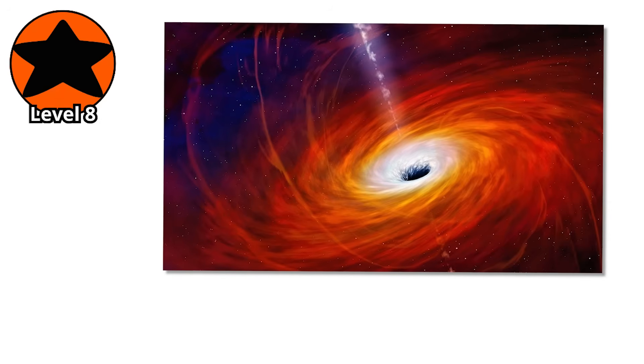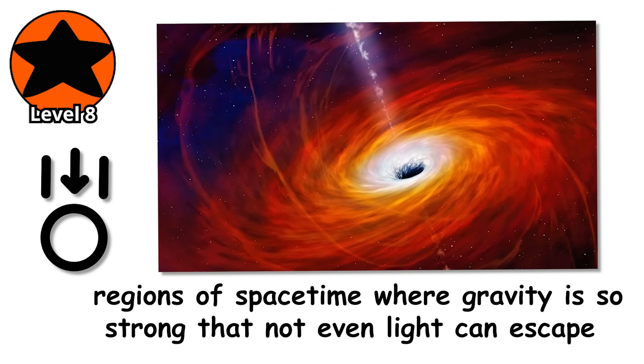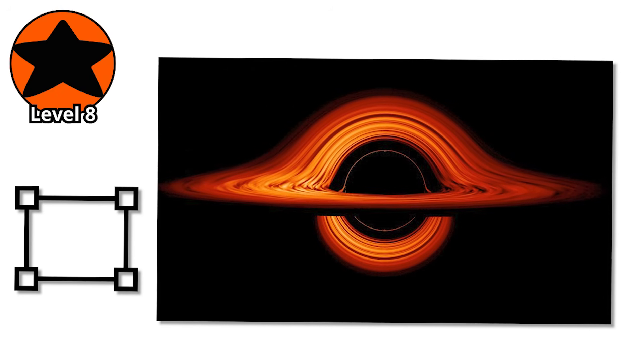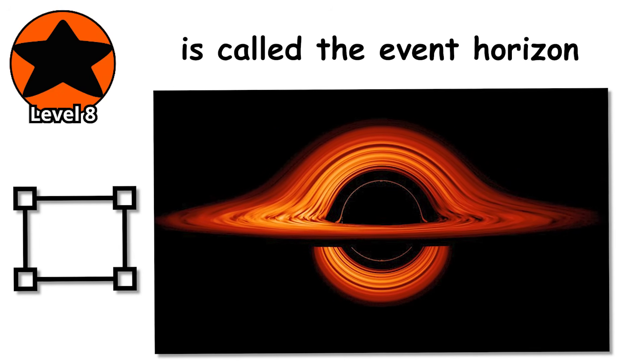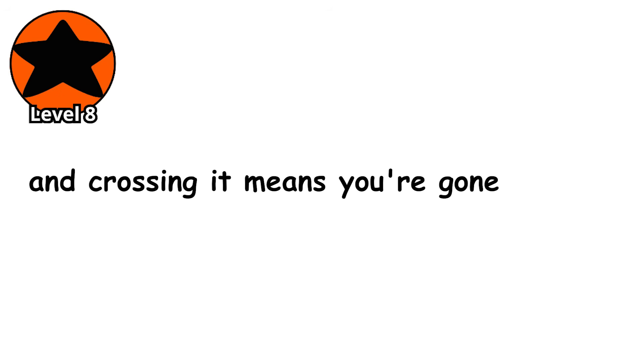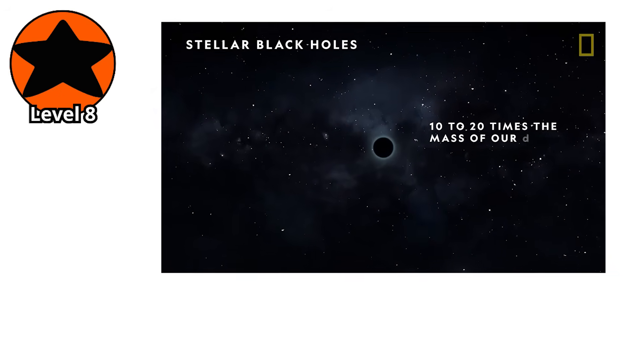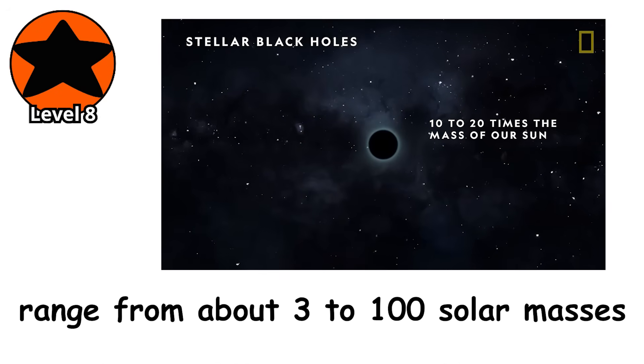Black holes aren't stars. They're regions of space-time where gravity is so strong that not even light can escape. The boundary around a black hole, the point of no return, is called the event horizon, and crossing it means you're gone forever.